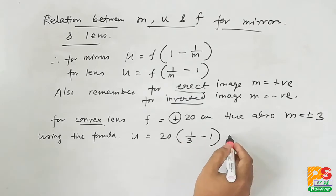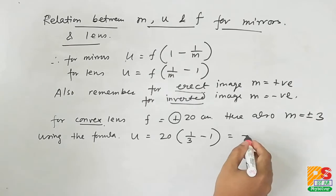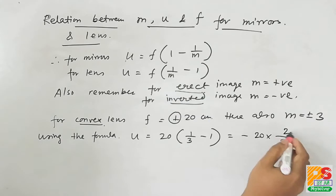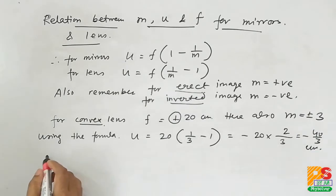Using m equals plus 3, answer is minus 40 by 3 centimeters.